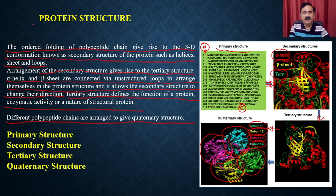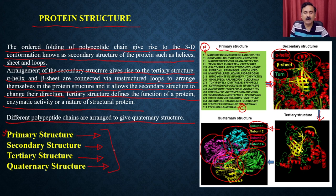To understand protein structures, you have to understand all four different types of structures: primary structures, secondary structures, tertiary structures, and quaternary structures. These are the different levels of organization present in protein structures.